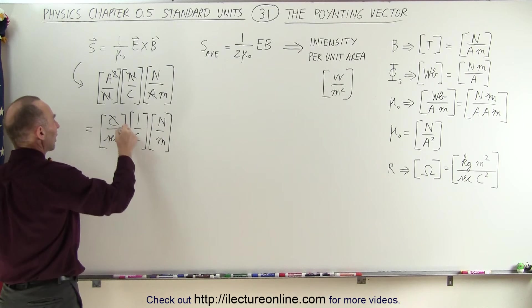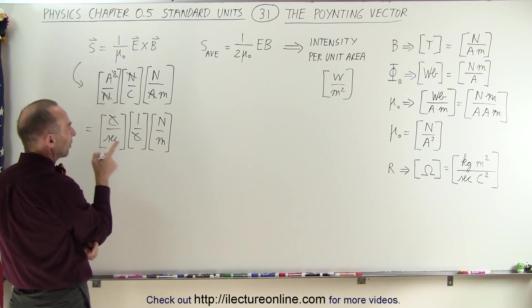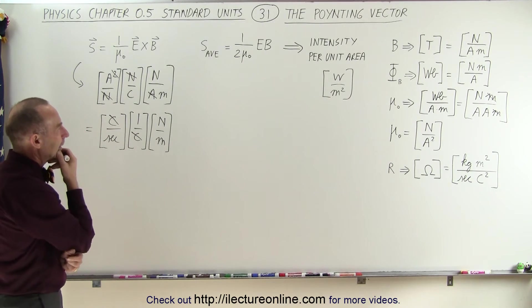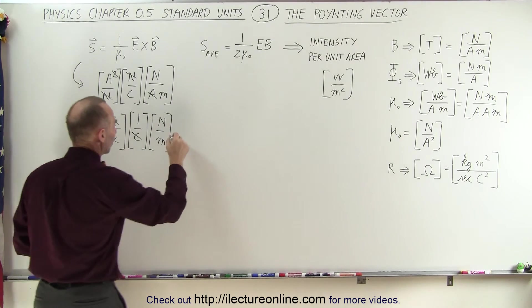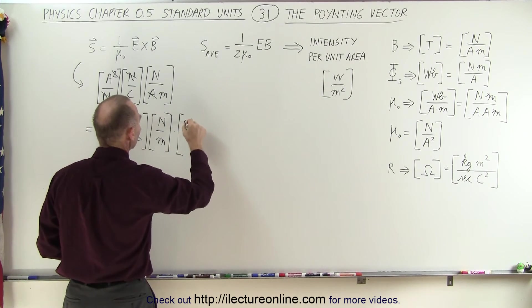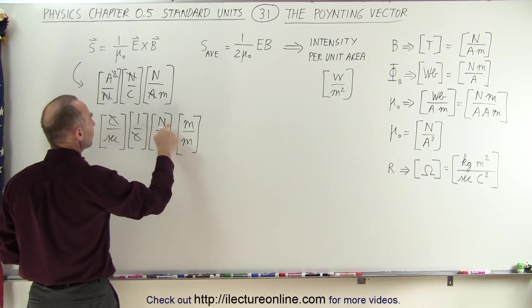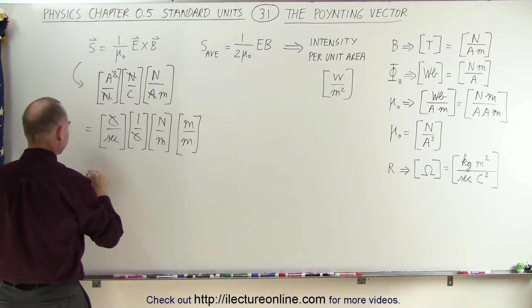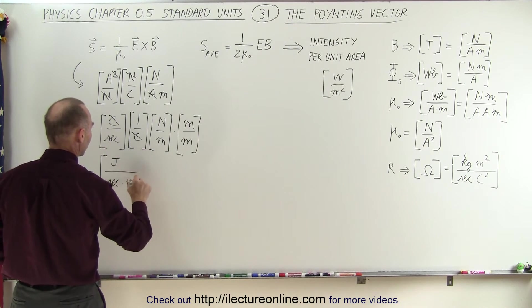Now the coulombs cancel out. Now we have newton per second times meter. And somehow we have to get watts out of there, watts per square meter. What if we multiply both the numerator and the denominator by m? Now in the numerator we have a newton meter, which is a joule. We have a second in the denominator and a meter squared. So newton meter is a joule divided by second times meter squared.